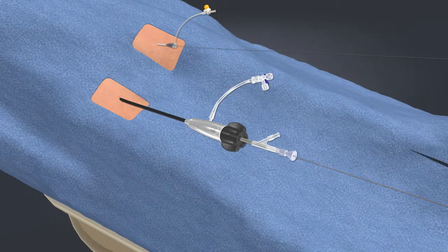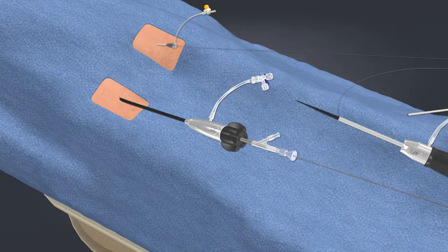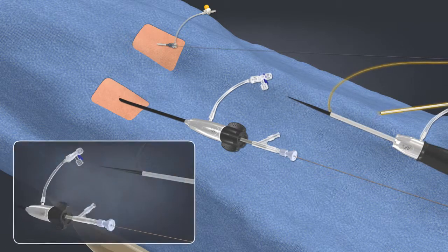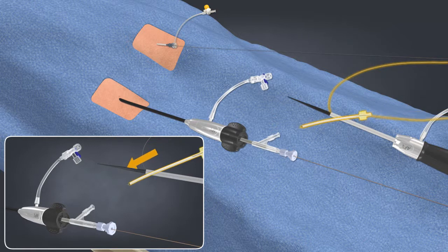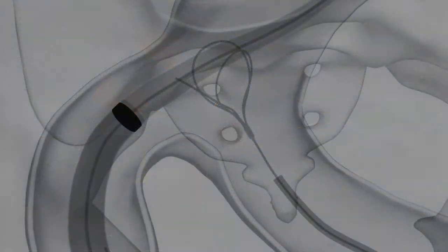Place the bifurcated delivery system on the sterile field. Bring the wire guide to the tip of the contralateral limb wire and insert the wire through the Y connector of the dilator. Continue feeding the wire through the wire guide until it exits the tip of the dilator.